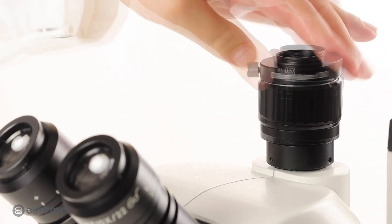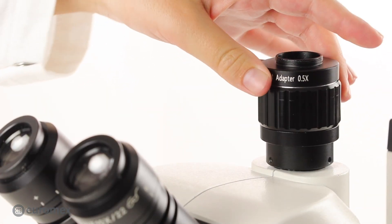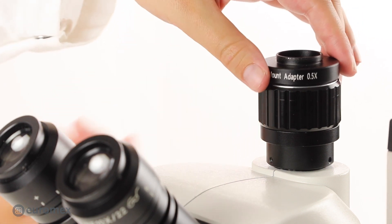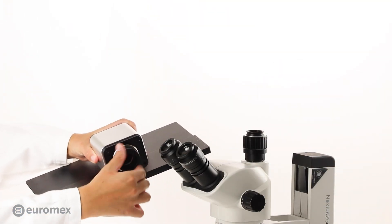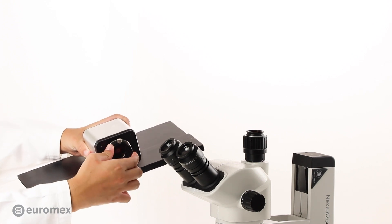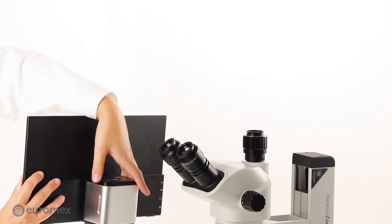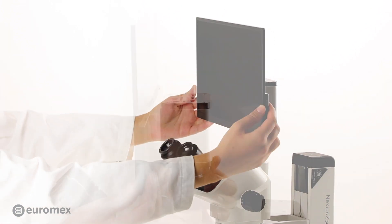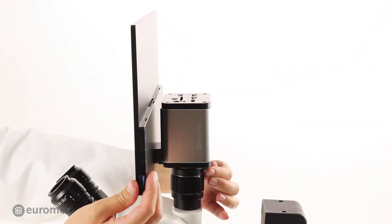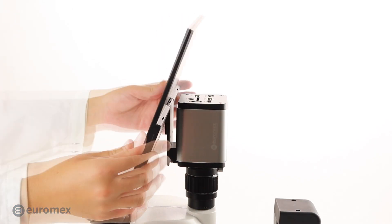If you would like to use another C-mount adapter from our product range, unscrew the top ring and attach it to the camera. Fixate the camera. You can easily change the angle.